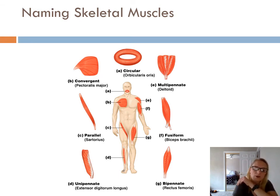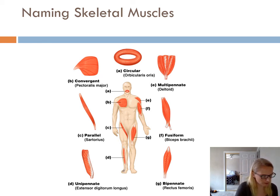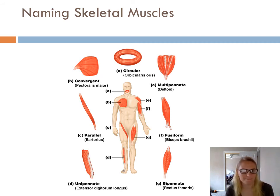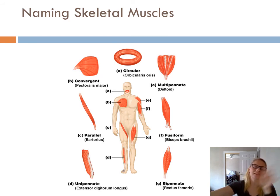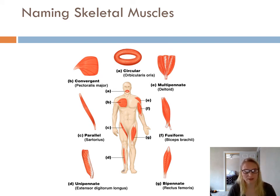We can also look at names based on size — gluteus maximus and gluteus medius are two sizes of muscles found on the backside. Location is another naming factor: zygomaticus comes off your zygomatic bone, biceps brachii references the brachium, and rectus femoris references the femur area.